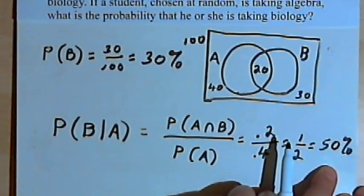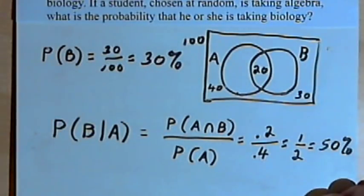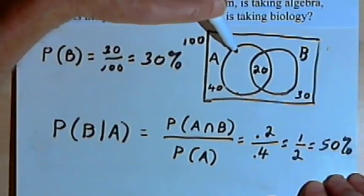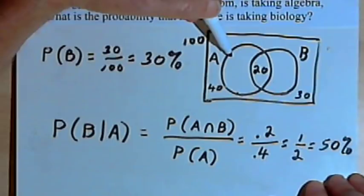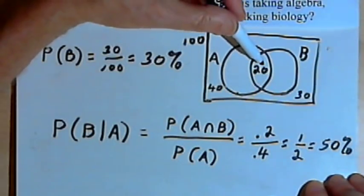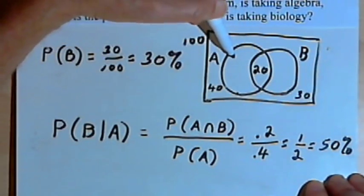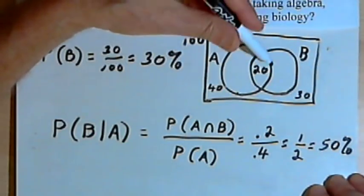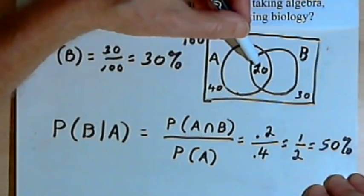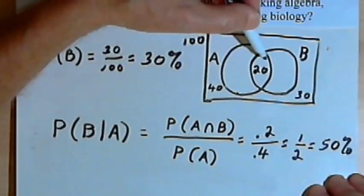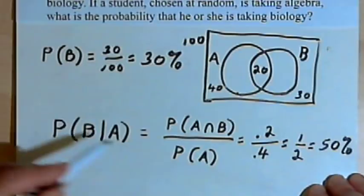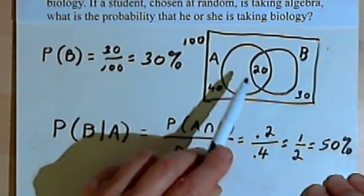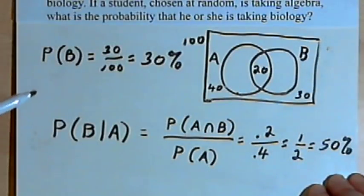Notice that 50% is different from the 30% we got when we didn't consider whether the student was taking algebra. The 50% makes sense if we look at the Venn diagram: of the 40 students taking algebra, 20 of them — half — have also decided to take biology. So if we know a student is taking algebra, there's a 50% chance that student is also taking biology. We could probably look at the diagram and see that intuitively, so the probability is 50%.